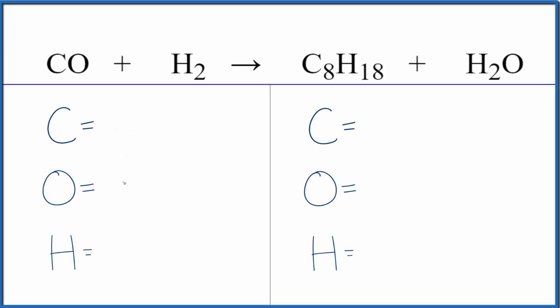Someone asked me how to balance this equation, so this is how I do it. First, I'd count all of the atoms up. So I have one carbon and one oxygen, and then I have two hydrogens.